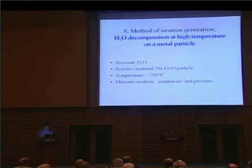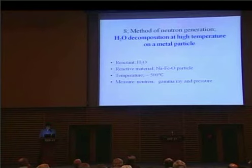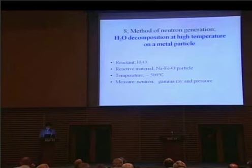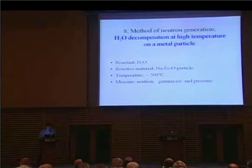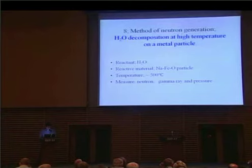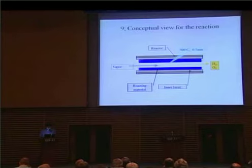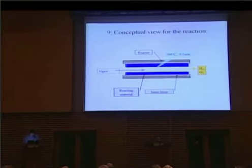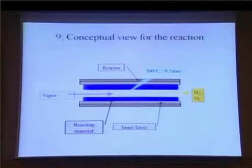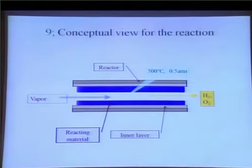Here I will show you how to generate neutron radiation. In this experiment, we used iron sodium oxide as the reaction medium. The reactant is high-temperature steam vapor. The vapor is decomposed at the surface of the oxide into hydrogen and oxygen molecules. We observed the occurrence of weak neutron emission during the test. This shows a conception drawing of the experimental condition: the high-temperature vapor flows over the reactive metal surface, the vapor decomposes into hydrogen and oxygen gas, and at that time radiation can be observed.